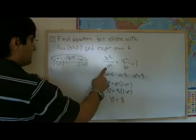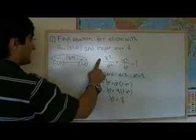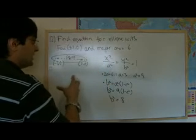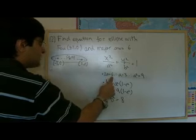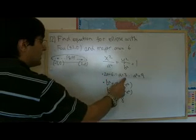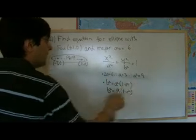Now, if a represents half the length of the horizontal axis, which we know is, in this case, the major axis, 2a must be 6, and a is therefore 3. Therefore, a² is equal to 9.